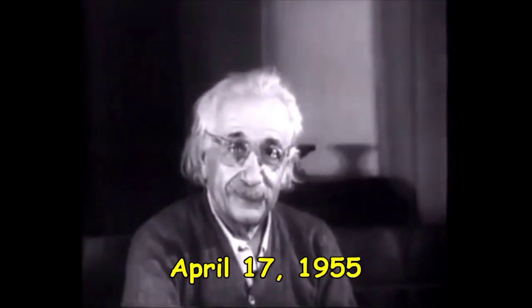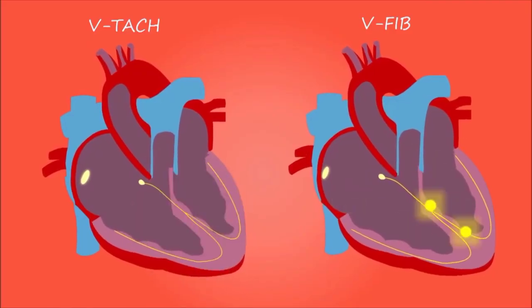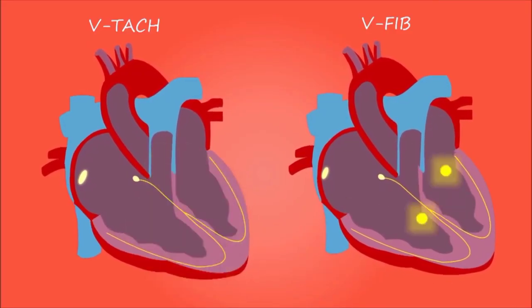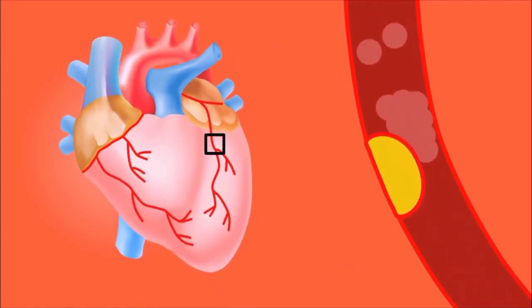On April 17, 1955, Albert Einstein experienced internal bleeding which was caused by the rupture of his artery.